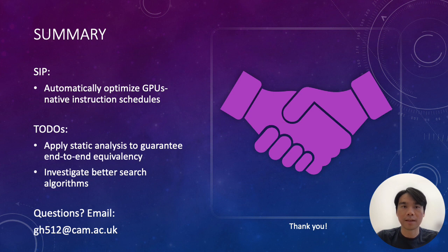In summary, SIP is an automatic optimizer to discover better instruction schedules, and because it works at a lower level, it can further accelerate specialized CUDA kernels. In the future, we want to investigate applying static analysis to guarantee end-to-end equivalency instead of relying on probabilistic testing. Also, we may look into reinforcement learning as a better search algorithm. If you have any questions, feel free to send me an email. Thank you.